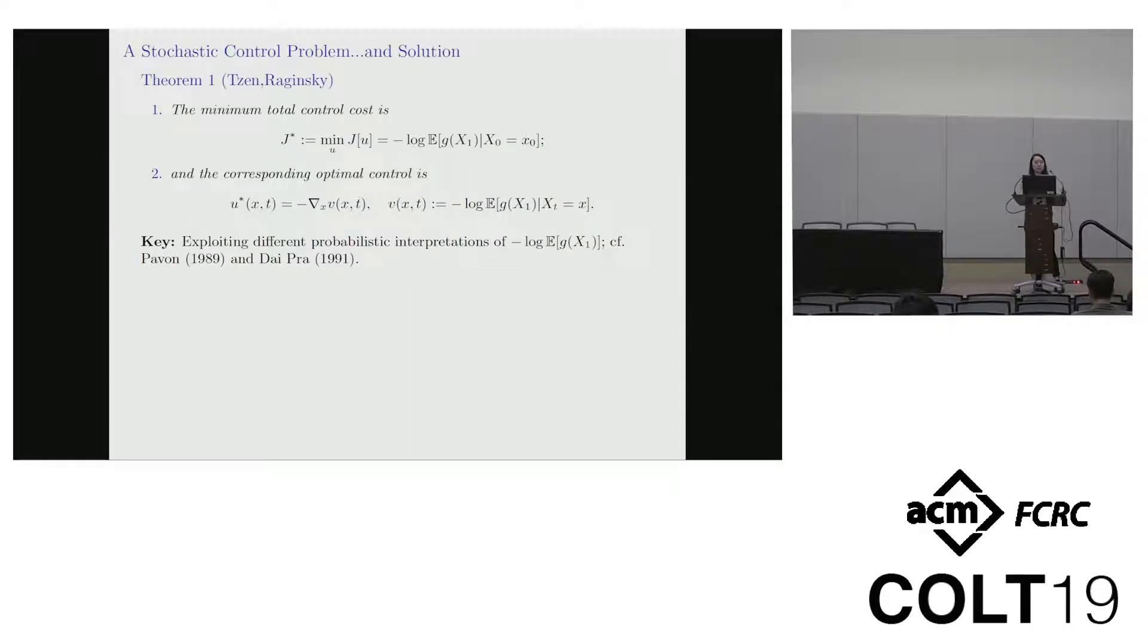Our first result is about the solution to this cost minimization problem. The minimum total cost is given by the terminal cost using the uncontrolled diffusion and the corresponding optimal control is given by negative grad of the value function where the value function is the terminal cost of the uncontrolled process condition on its being in state x at time t.